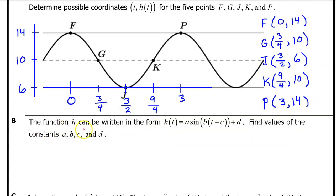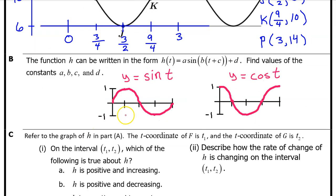Part B. The function h can be written in the form h of t equals a times sine of b times t plus c plus d. Find the values of constants a, b, c, and d. I want you to memorize what the parent functions look like for the graphs of y equals sine t and y equals cosine t. Notice that for cosine, at t equals zero, the value is at its highest. Whereas for sine t, at t equals zero, the value is at the midline.